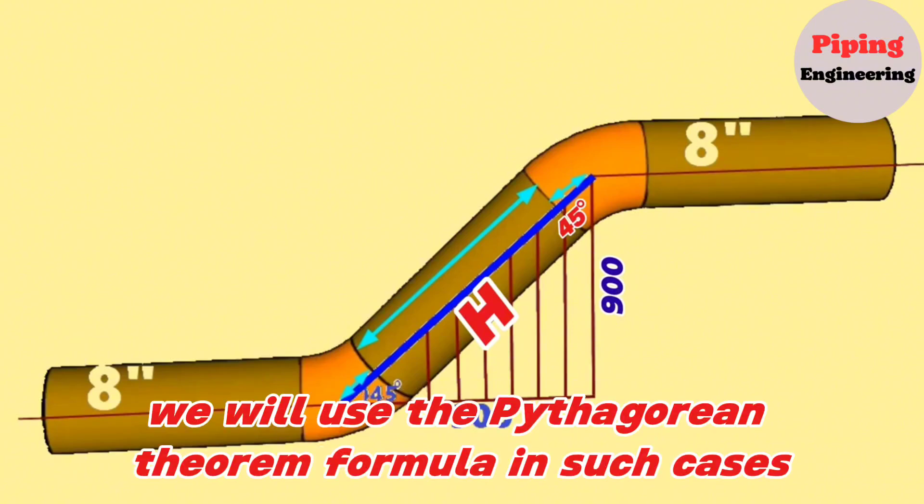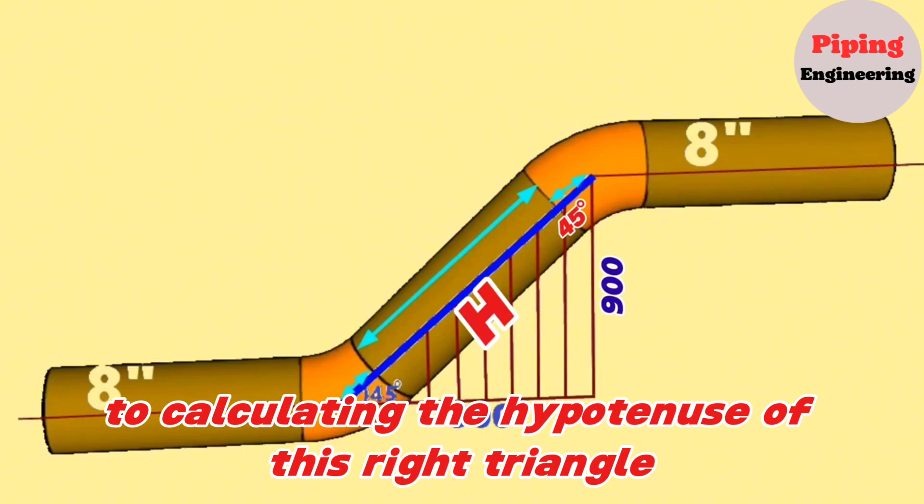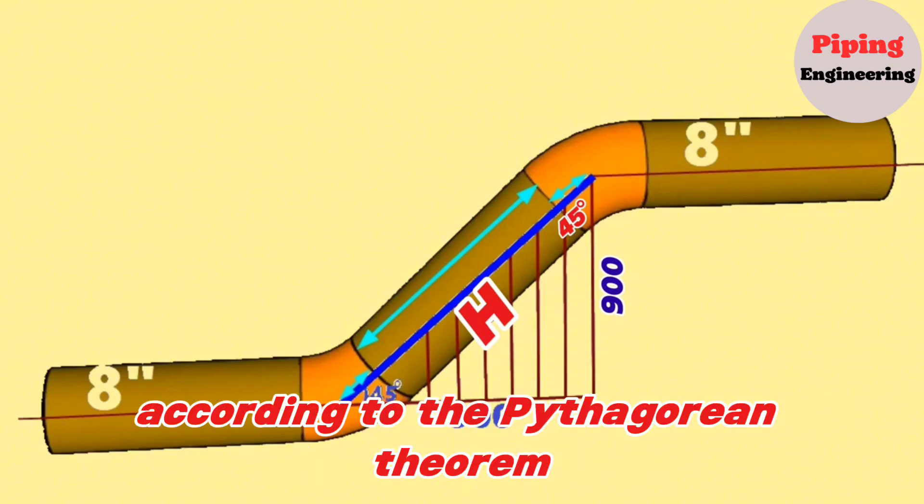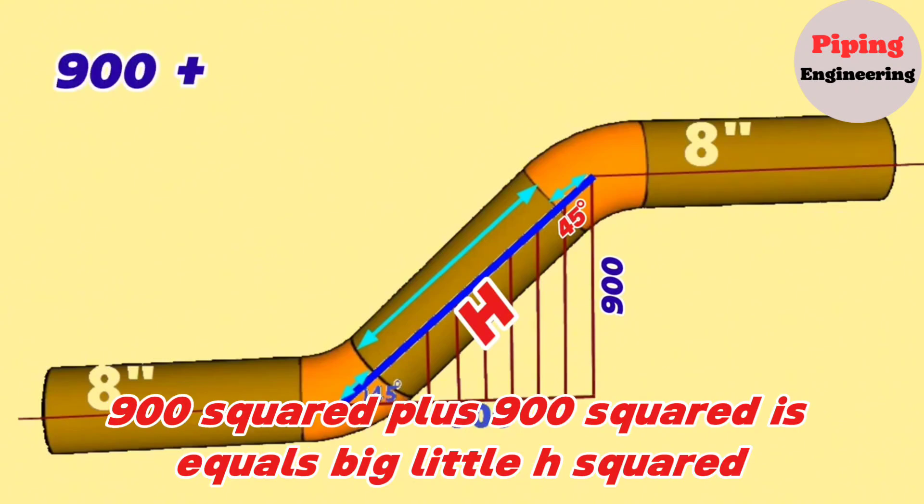We will use the Pythagorean theorem formula to calculate the hypotenuse of this right triangle. According to the Pythagorean theorem, 900 squared plus 900 squared equals H squared.